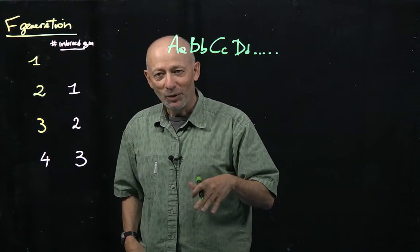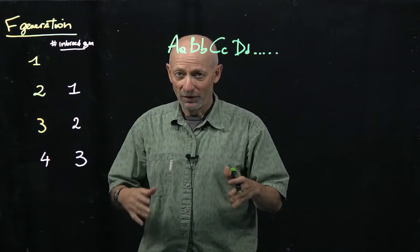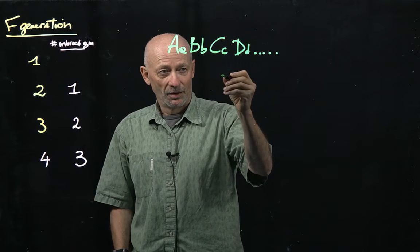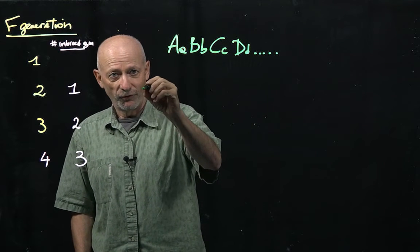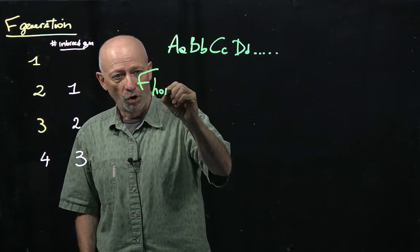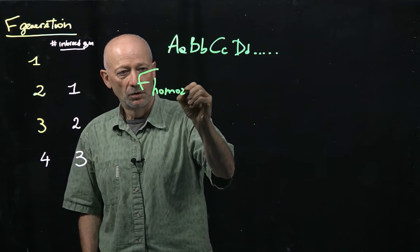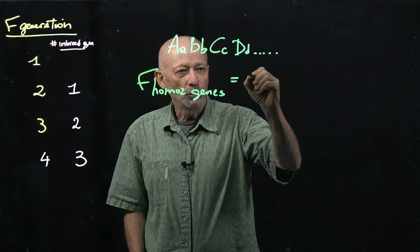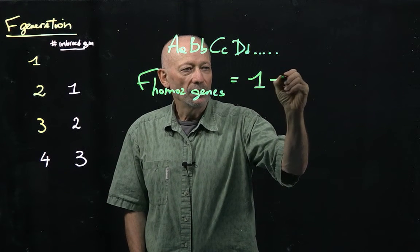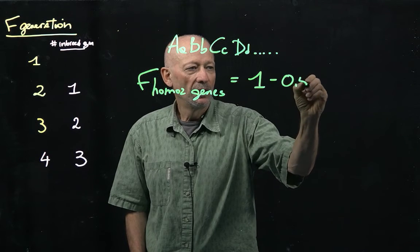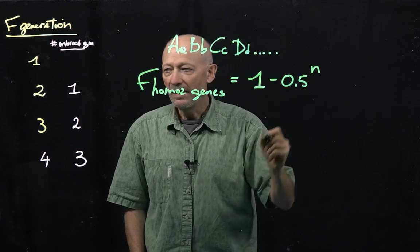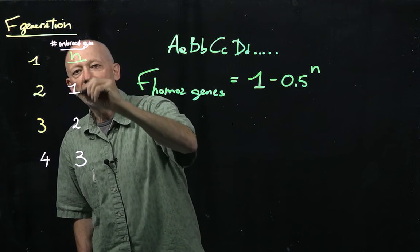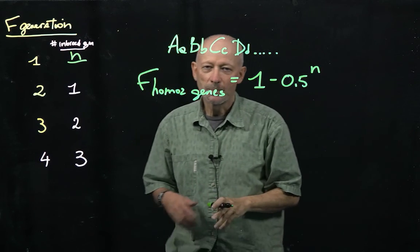And in fact, it will follow exactly the same formula that we were using for the population. And what we're going to get is the following formula. The fraction of homozygote genes would be equal to 1 minus 0.5 to the power of n. n being this number here, this is n, the number of generations of inbreeding.